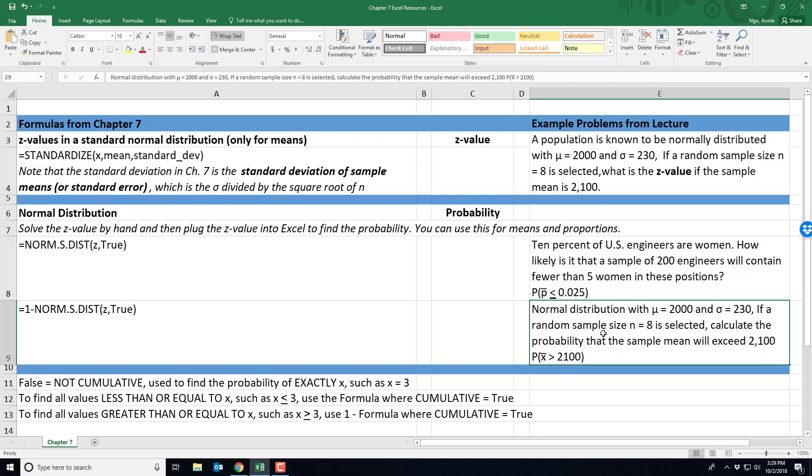If a random sample size of 8 is selected, calculate the probability that the sample mean will exceed 2100. That tells me we're interested in greater than 2100.